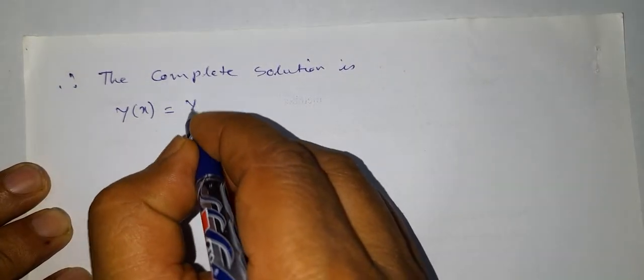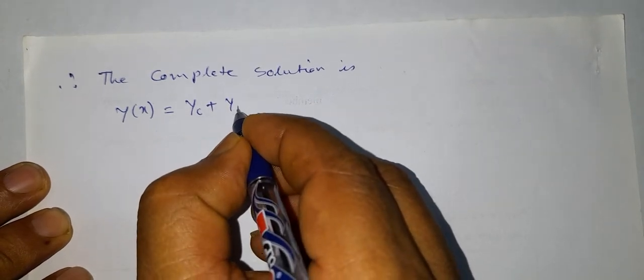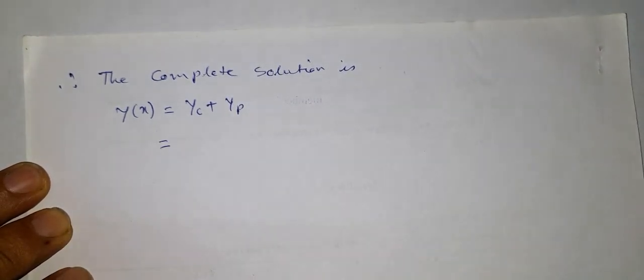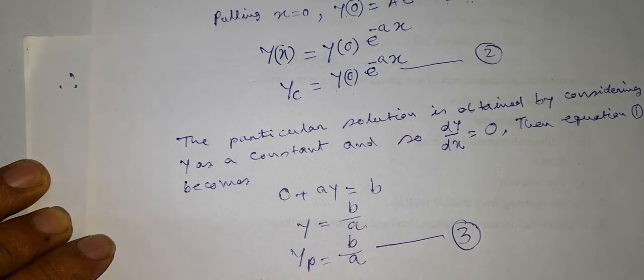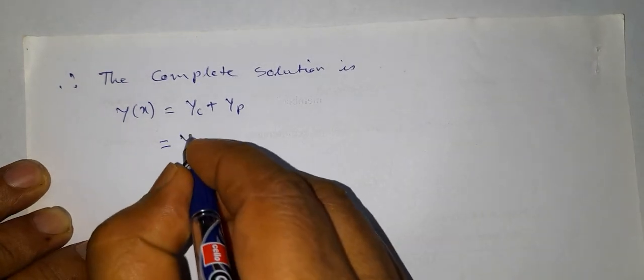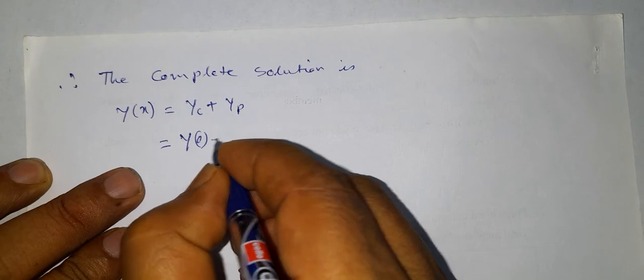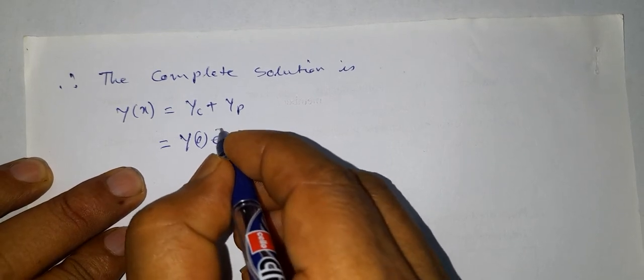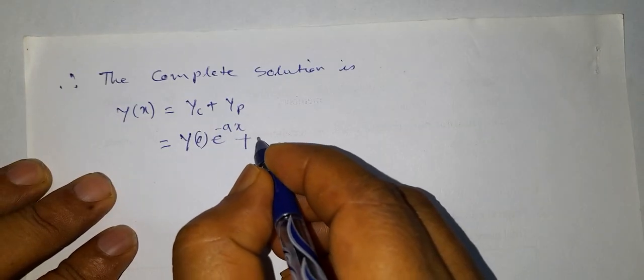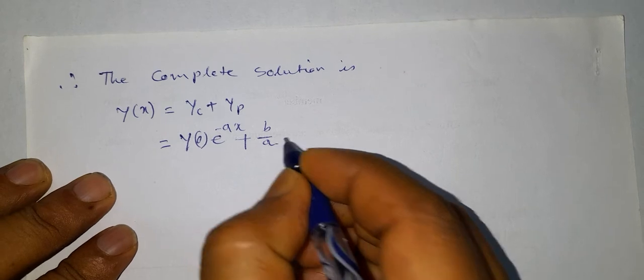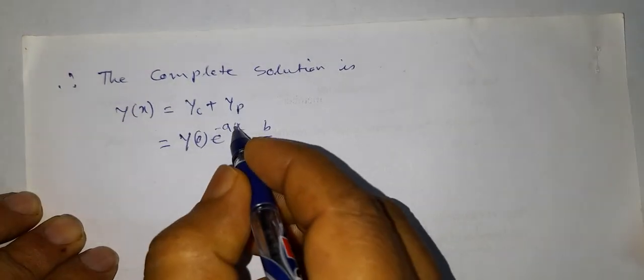Therefore, the complete solution is y(x) = y_c + y_p. y_c = y(0) · e^(-ax), so y(0) · e^(-ax) + y_p = b/a. So we write here b/a.